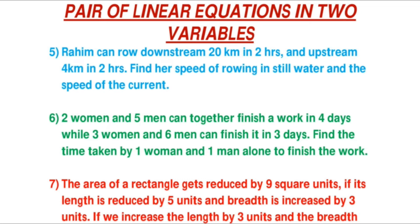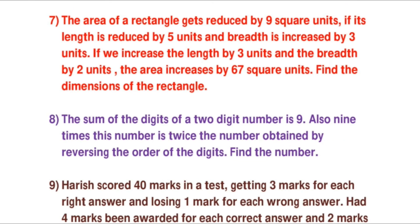For word problems related to pair of linear equations, upstream and downstream motion problems are very important. In problem 5 there is such a problem. In problem 6: two women and five men can together finish a work in 4 days, while three women and six men can finish it in 3 days — find the time taken by one woman and one man alone to finish the work. Assume the time taken by one woman as x days and one man as y days, then set up and solve the linear equations.